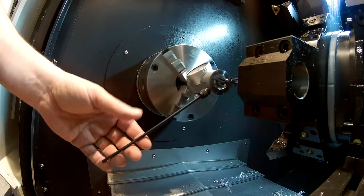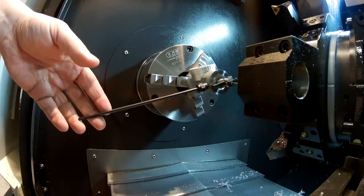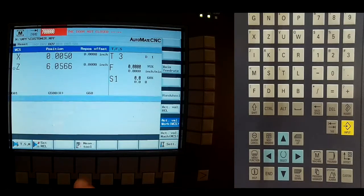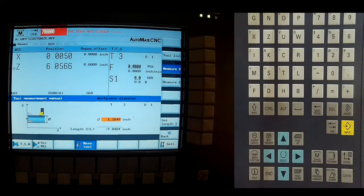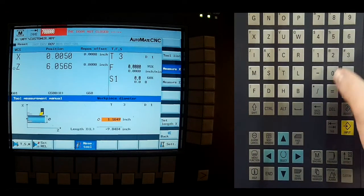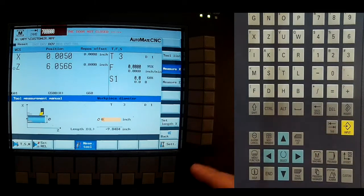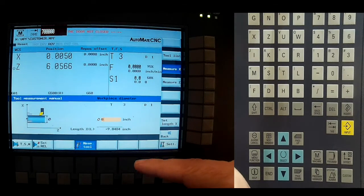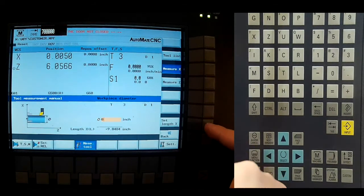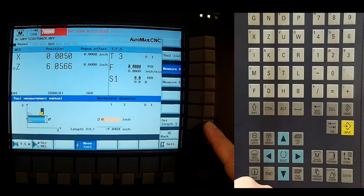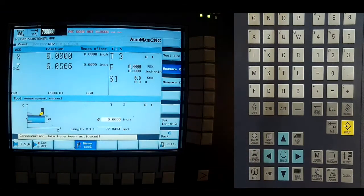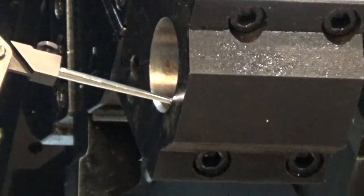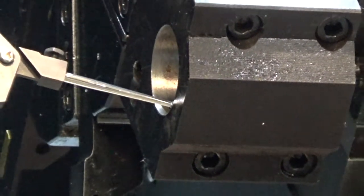So once we're over the center, again process is the same. We're going to go to measure tool, measure tool. We're measuring an X, there is no diameter. We're center line of the spindle, center line of the bore on our tool holder. So we're going to punch in zero, set length X, and so our X value is zero. That's all there is to it.